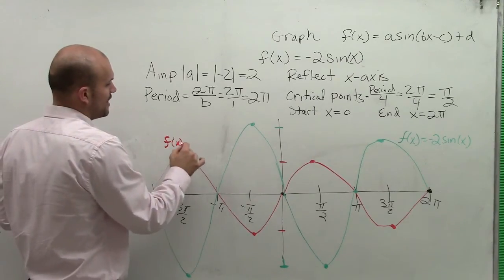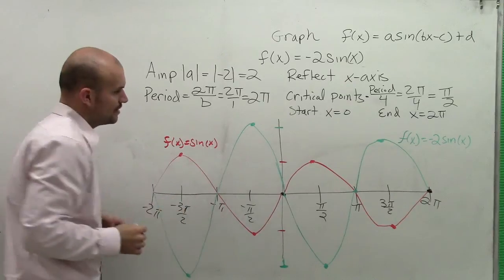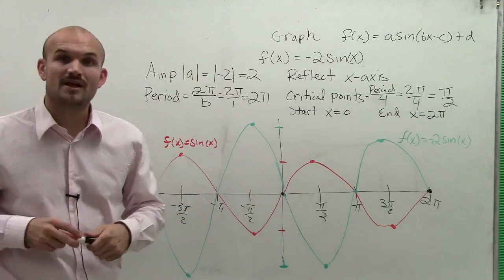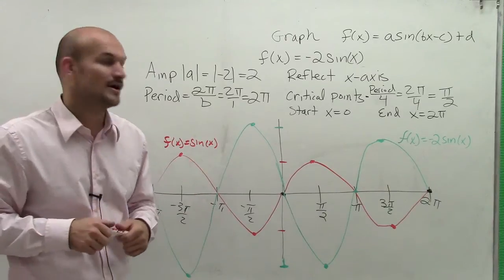So my red was f of sin(x). So there you go, ladies and gentlemen. That is how you graph when you have a reflection and a new amplitude. Thanks.